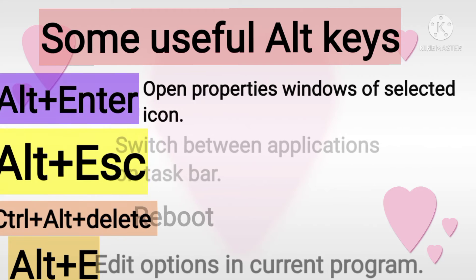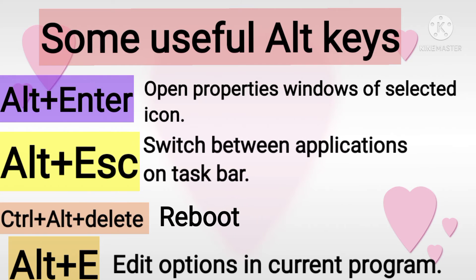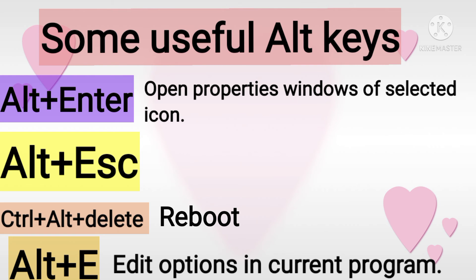Next, Alt+Enter — it opens the properties window of the selected icon. Next, Alt+Escape — it switches between applications on the taskbar. Ctrl+Alt+Delete — it reboots. Alt+E — it is used to edit options in the active window.